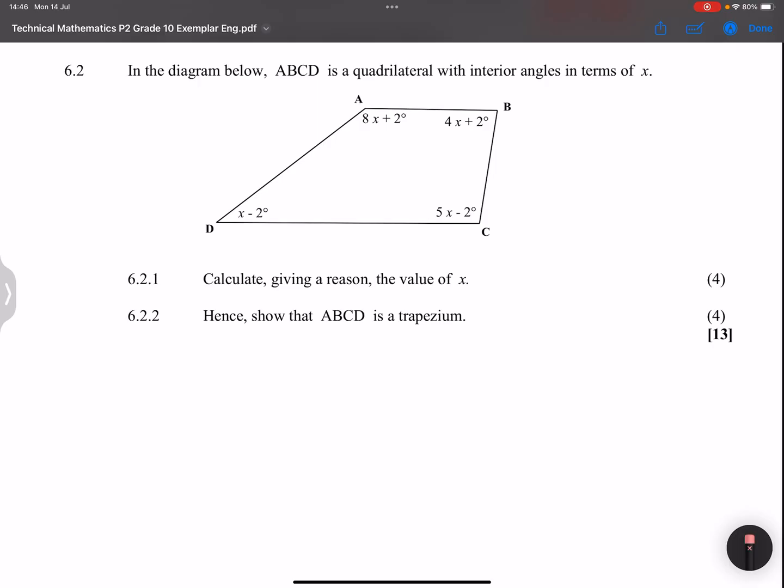We are looking at 6.2 this time around. If you haven't subscribed, please make sure you are part of this family. Then let's dive right into it. They say to us, in the diagram below, we've got ABCD, which is a quadrilateral, with interior angles in terms of x.